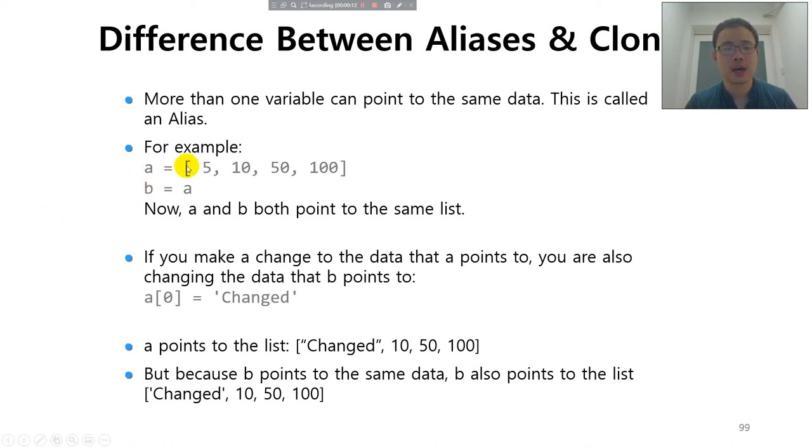For example, you assign this list to A, which is a list, and you also assign the list to B. So B and A are both pointing to the same list.